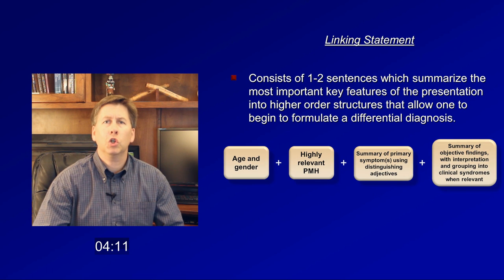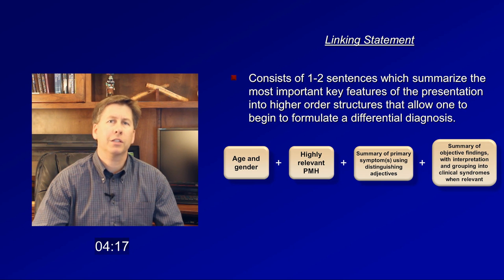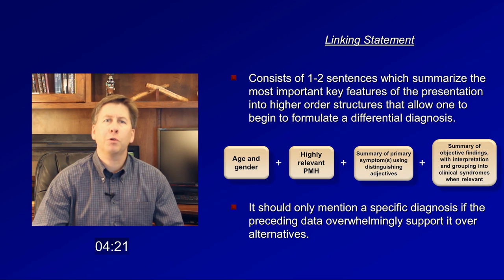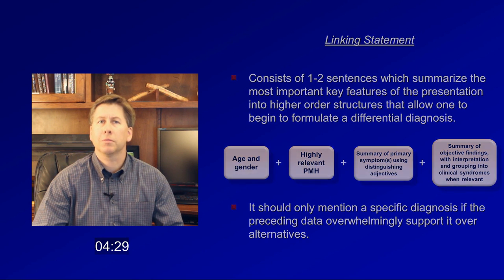In summary, Mrs. Jones is an 80-year-old woman with a past medical history of MI and diabetes who presents with subacute progressive positional lightheadedness culminating in two recent episodes of syncope. Her exam is notable for mild orthostatic hypotension, an early systolic murmur, unremarkable labs, and an EKG with evidence of mild conduction system disease.